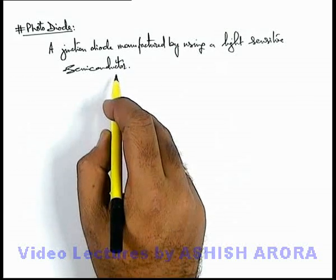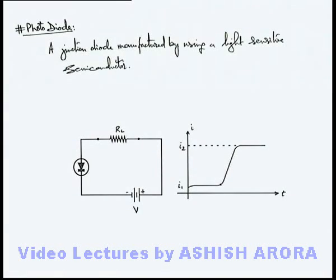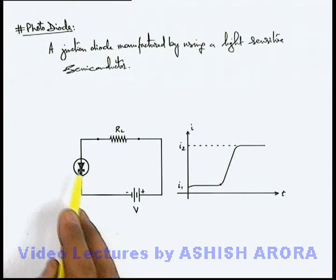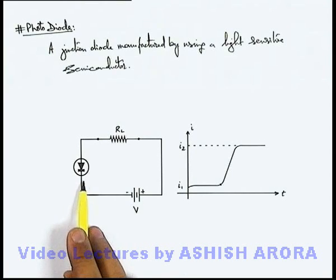Let us understand the same phenomenon with the help of a circuit diagram and its characteristics. In this picture, we can see that this is the symbol of a photodiode which is connected with a load resistance and a battery. With the polarity of the battery, we can see that the diode is forward biased.